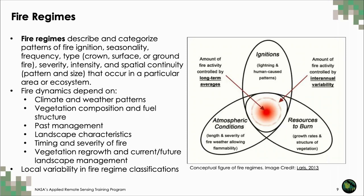Fire regimes are a critical foundation for understanding and describing effects of changing climate on fire patterns and characterizing their combined impacts on vegetation and the carbon cycle. Fire regimes typically describe and categorize patterns of fire ignition, seasonality, frequency, type, severity, intensity, and spatial continuity that occur in a particular area or ecosystem.